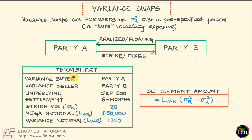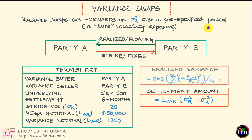My hedging horizon is around six months, and therefore I fix my settlement date to be six months from today. It is over this upcoming six-month period that my realized variance will be calculated. For the formula, I will first identify all the trading or business days that fall in this six-month period — let's say the number of trading days is capital N. For each of these days, as we move along, I will keep observing the closing levels of S&P 500.